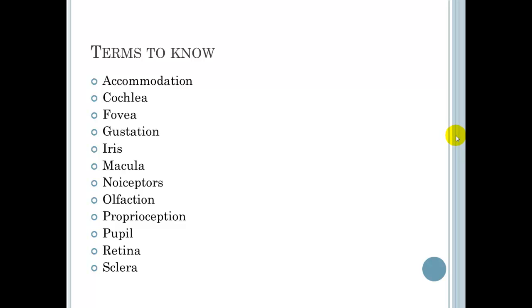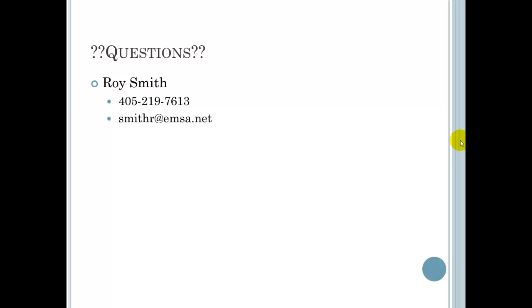These are terms to know. I'm going to briefly go over these, but these should be located on the actual digital flashcards, G Flash Pro or G Flash Plus. Accommodation, which is a visual acuity of sorts. Cochlea, which we just got through talking about. Fovea, focal point in the eye. Gustation, which is taste. Iris, which is part of the eye. Macula, macular degeneration, again of the eye. Nociceptors, these are going to be pain receptors and sensation receptors. Olfaction, which is olfactory or smell. Proprioception, this is going to be position of your body. Pupil, which is going to constrict or dilate, adjusting the amount of light that comes into the eye. Retina, which is at the back of the eye. The sclera, which is the white of the eye. That pretty much covers the amount of terms.